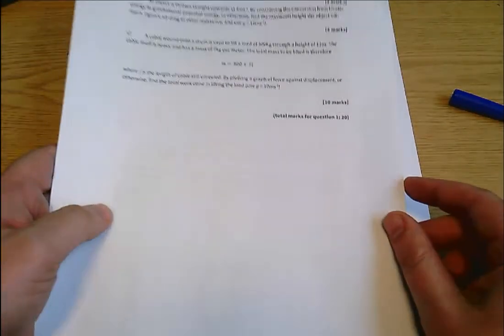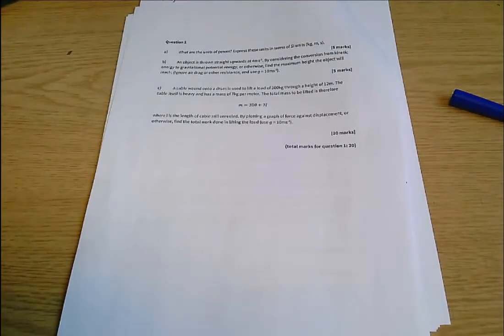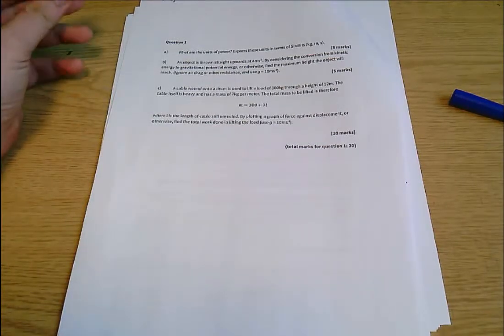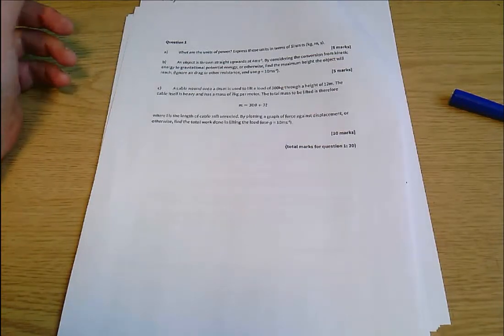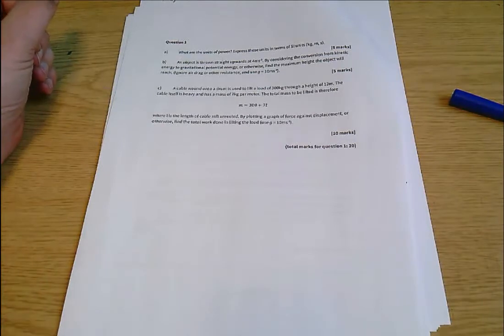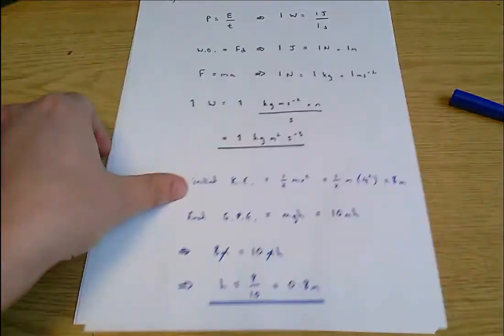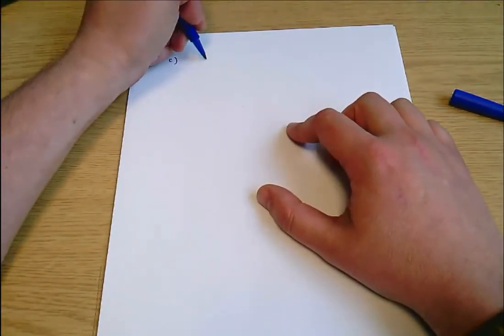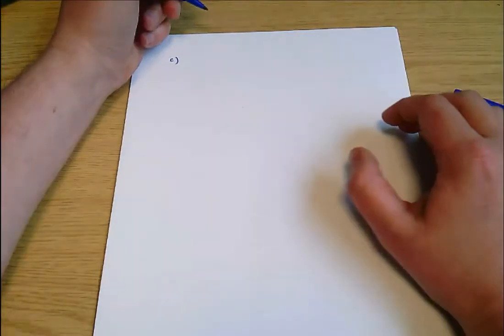Part C says a cable that's wound onto a drum is used to lift a load of 300 kilograms through a height of 12 meters. The cable itself is heavy and has a mass of 7 kilograms per meter. The total mass to be lifted is therefore m equals 300 plus 7L, where L is the length of cable still unreeled. By plotting a graph of force against displacement or otherwise find the total work done in lifting the load.